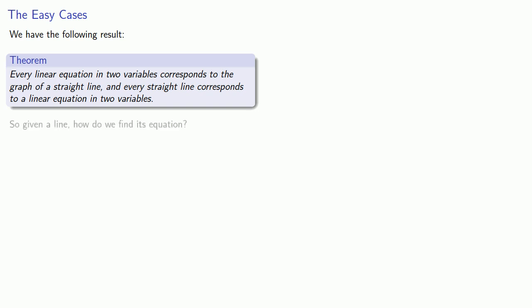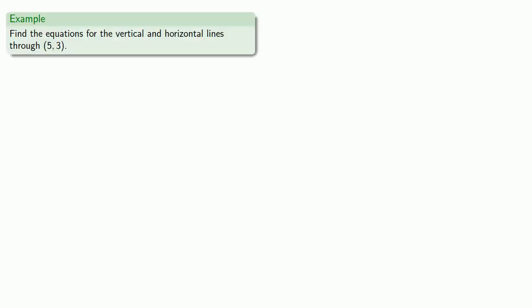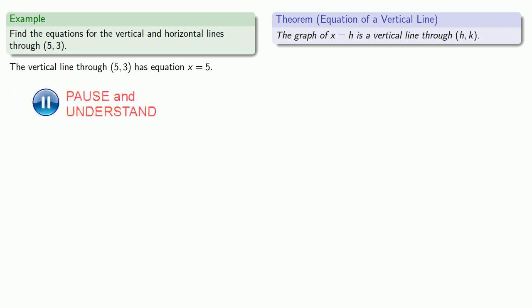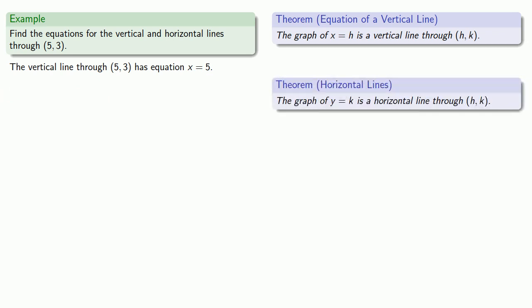The problem is: given a line, how do we find its equation? Let's start with a couple of simple cases — finding the equations for the vertical and horizontal lines through a given point. The graph of x equals h is a vertical line through that point, so the vertical line through our point has equation x equals 5. Likewise, the graph of y equals k is a horizontal line, so the horizontal line through our point has equation y equals 3.